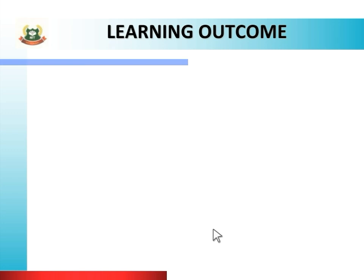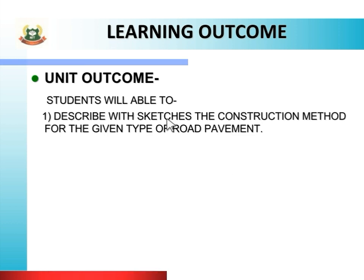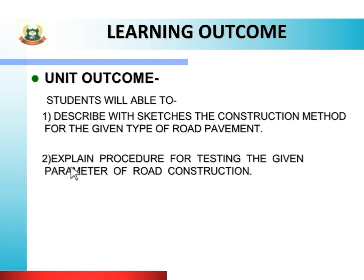Next is unit outcome. Students will be able to describe with sketches the construction method for the given type of road pavement. After studying this unit, you will be able to explain the road pavement construction process with diagrams. You will also be able to explain the procedure for testing the given parameter of road construction.